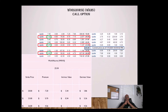Now let's take a look at out of the money — the $26 strike price. That is 100% out of the money. The premium is $4.56. As we stated earlier, out of the money will not have any intrinsic value. So that $4.56 is all extrinsic time value, and as we get closer to the actual expiration date, the extrinsic value will start to decay fast.